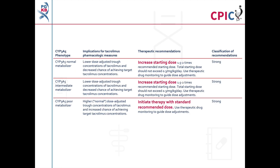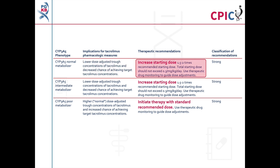These are the CPIC dosing recommendations for tacrolimus. Patients with a CYP3A5 normal metabolizer phenotype will have a decreased chance of reaching target tacrolimus concentrations with standard dosing. These patients should be given an increased starting dose of tacrolimus. This is a strong recommendation.